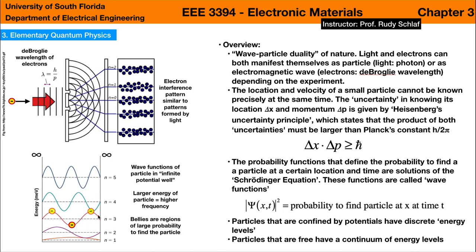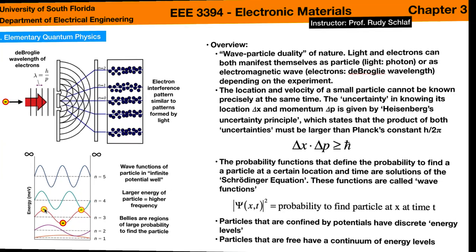We will see that the energy levels are quantized, and the probability to find a particle is defined by the absolute square of the wave function. In the infinite potential well, electrons are most likely where the bellies of the sine functions are — the solutions of the Schrödinger equation. Once we understand that, we will apply this to the hydrogen atom and understand why we get discrete emission lines from hydrogen gas and other atoms. At the end of the chapter, we will briefly discuss how a laser functions.